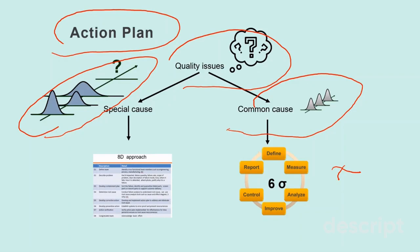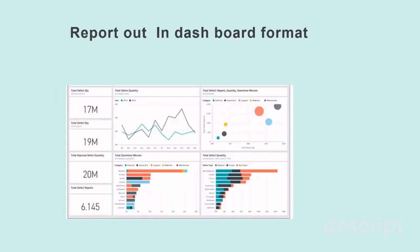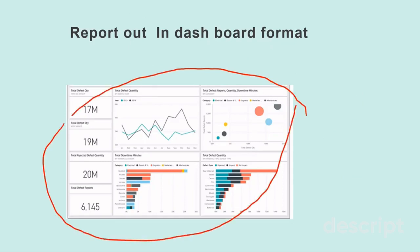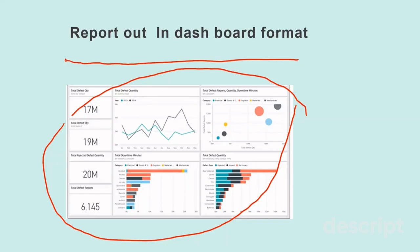A more detailed video on special cause and common cause variation is available at the end of this video and at the link below. This shows data visualization — known as a dashboard — in a reporting format that Power BI is capable of producing. However, the most challenging part is the foundation work of data collection and ensuring data accuracy so it can be transformed into process insights and target the right improvement effort. Do invest your time to build a good data collection system — once you have mastered it, reporting will be an easy task.